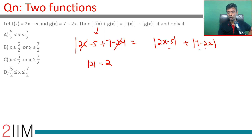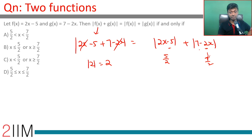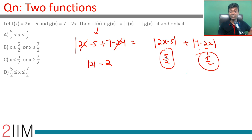|2x - 5| breaks at x = 5/2, and |7 - 2x| breaks at x = 7/2. What I mean is: for x > 5/2 it's 2x - 5, and for x < 5/2 it's 5 - 2x. Similarly, 7 - 2x goes to zero at x = 7/2. So 5/2 and 7/2 are our pivotal points, and our answer will be anchored around those.